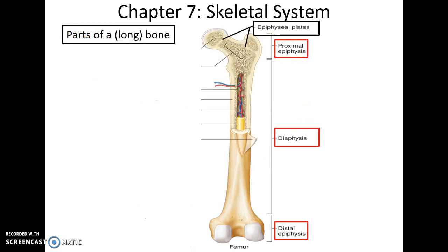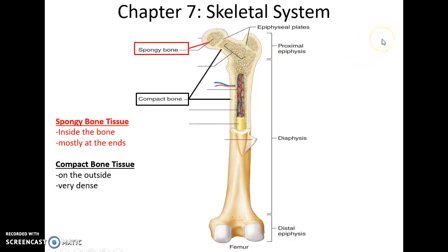If you look at the inner workings of a long bone, you see that it has two epiphyses: a proximal epiphysis at one end and a distal epiphysis at the other end, and between them lies the diaphysis or shaft. Within the epiphyses are epiphyseal plates in a child, or epiphyseal lines in an adult. The bone tissue near the inside at the ends is spongy bone tissue with lots of empty space, and on the outside everywhere around the bone is compact bone tissue — very dense and protective.